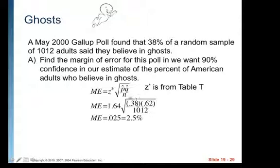It's 1.64. So we need to go 1.64 standard deviations on either side of our estimate times the square root of our P hat, which is 0.38 times Q hat. Any Q, whether it's just plain Q, Q hat, later we'll talk about a Q naught, they're always going to be 1 minus their corresponding little P. So in this case, P hat, 1 minus 0.38 is 0.62 divided by N. We had 1,012 adults.